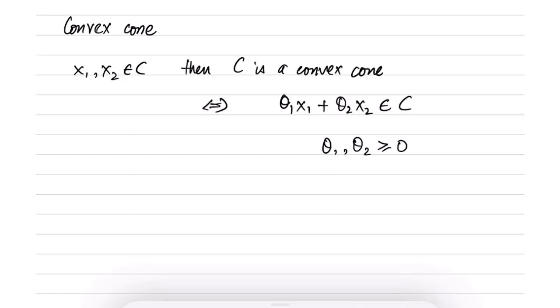In fact, we specified the affine set and convex set in terms of θ and 1-θ. So that is another way of saying that θ1 and θ2 add up to 1.